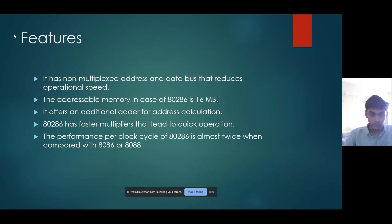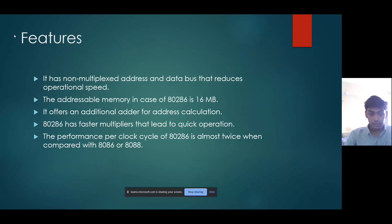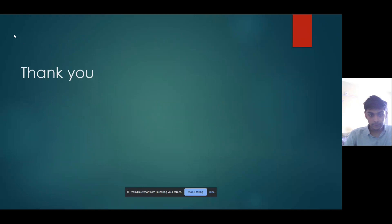The addressable memory in the case of the 80286 is 16-bit. It offers an additional hardware unit for address calculation. The 80286 has faster multipliers that lead to quick operation. The performance per clock cycle of the 80286 is almost twice when compared with the 8086 and 8088. Thank you.